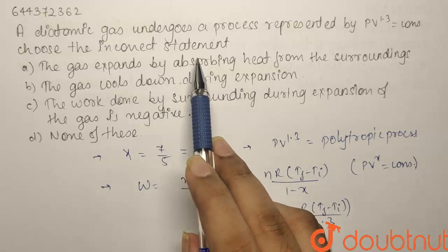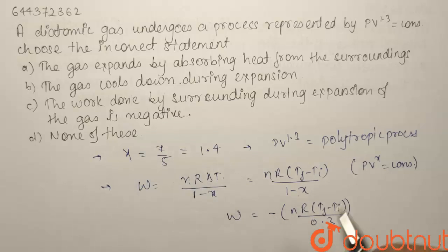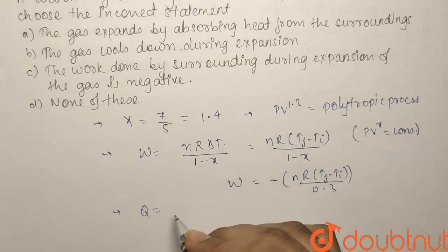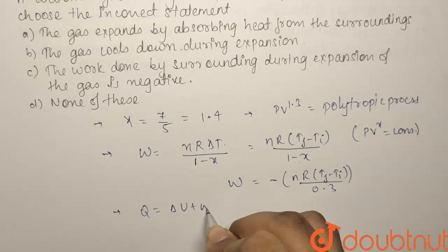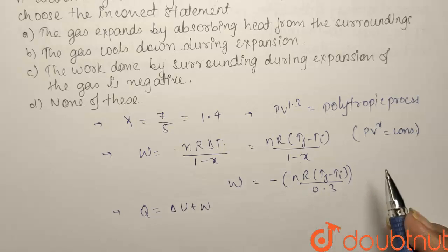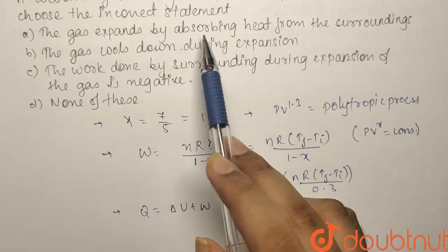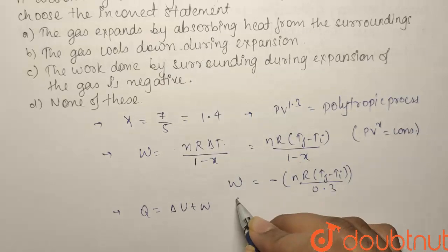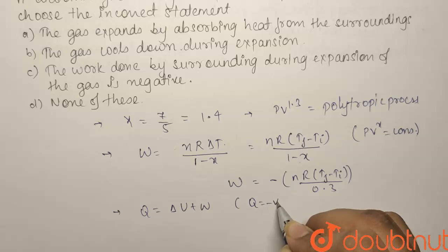Now, what you know, Q is equals to, by first law, Q is equals to delta U plus W. Now, we have seen that the first option says that gas expands by absorbing heat from the surroundings. Absorbing heat means Q equals to negative.